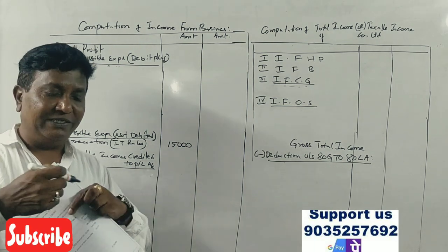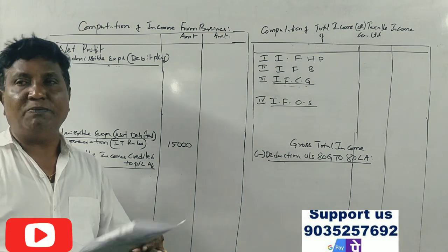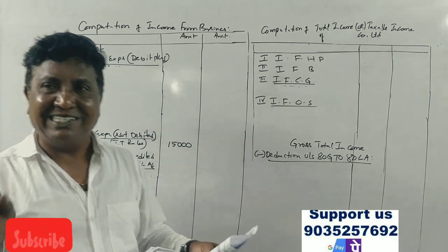The general expenses will be considered. The 5,000 rupees for advertisement — that is a business expense.